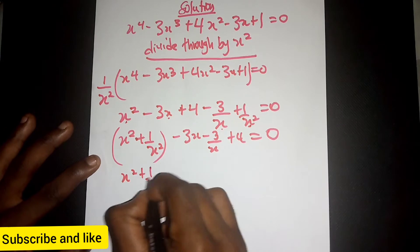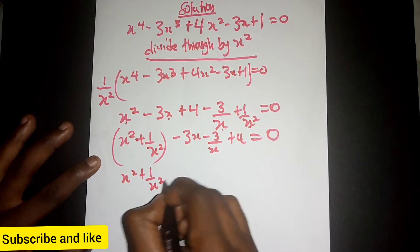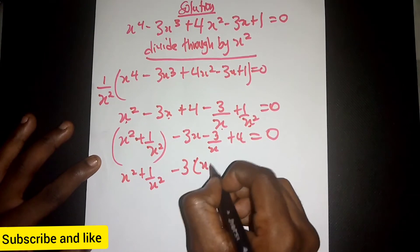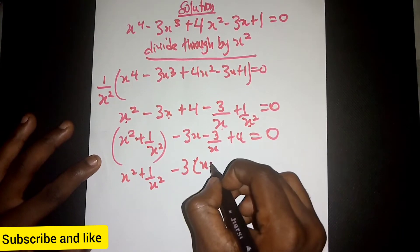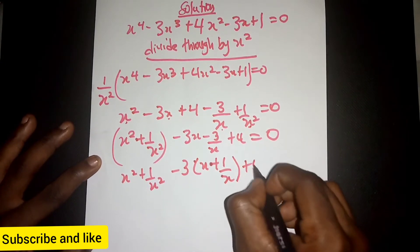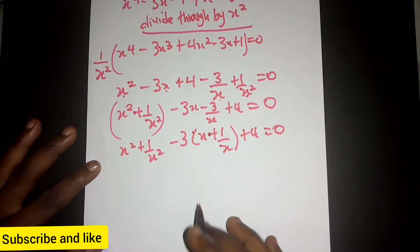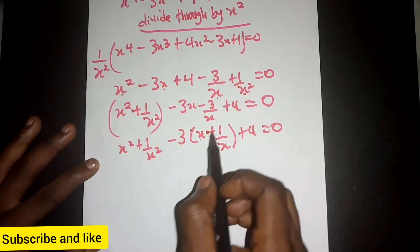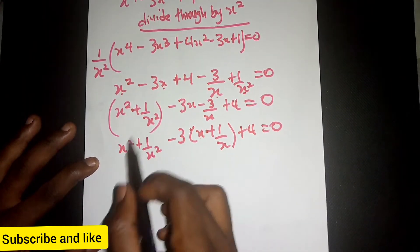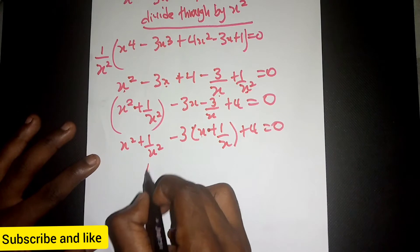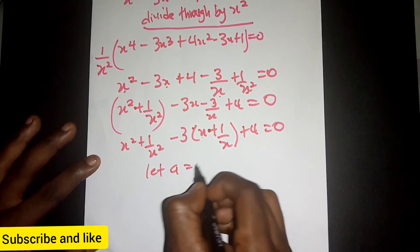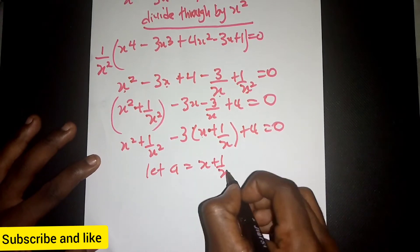We can write this by factoring out negative 3, giving us s plus 1 over s, then plus 4 equal to 0. We notice that the expression s plus 1 over s appears, so we are going to let a variable a be equal to s plus 1 over s.